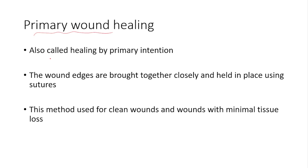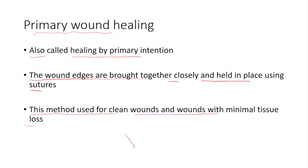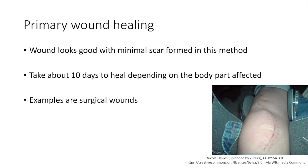Regarding primary wound healing, it is also called healing by primary intention. The wound edges are brought closely together and held in place using sutures, staples, or any type of closing method to hold the wound edges together until they heal. This method is used for clean wounds with minimal tissue loss. We try to approximate the edges with sutures and leave the wound to heal, resulting in a good-looking wound with minimal scarring.